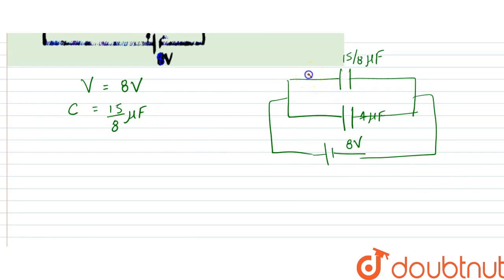So the charge in this branch, q would be equal to C into V, so that is 15 by 8 into 8 which is equal to 15 microcoulomb, right, that is the amount of charge.